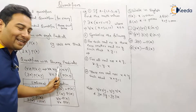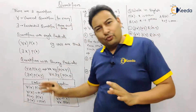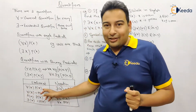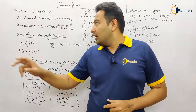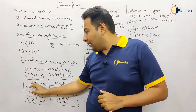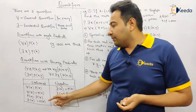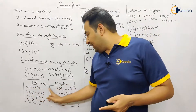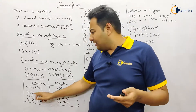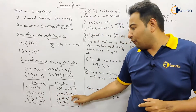Now let's talk about negation of a quantifier. For the statement 'for every x, P(x),' taking its negation: the universal quantifier becomes existential and P(x) becomes negation of P(x). So 'for every x P(x) is true' becomes 'there exists some x, P(x) is not true.' Similarly, if you take negation of 'for every x, negation of P(x),' it becomes 'there exists some x for which P(x) is true.'